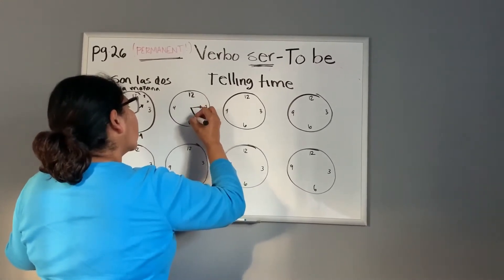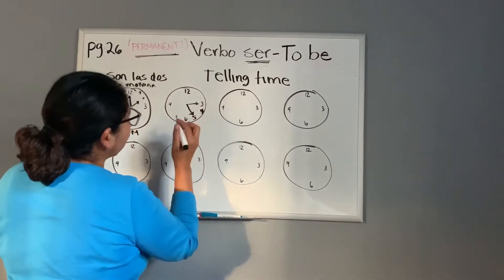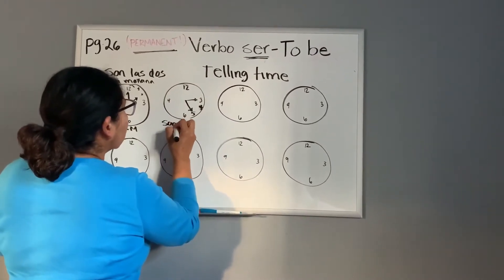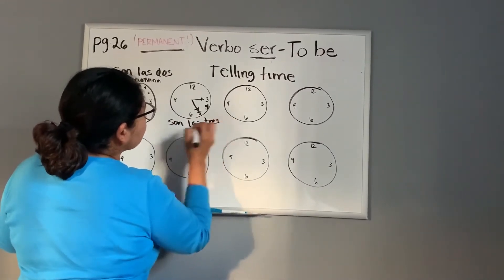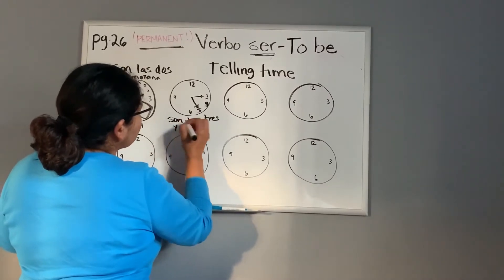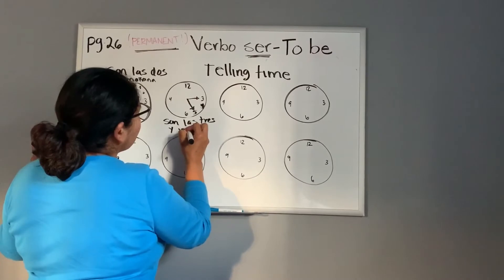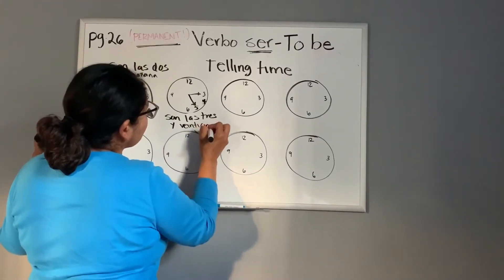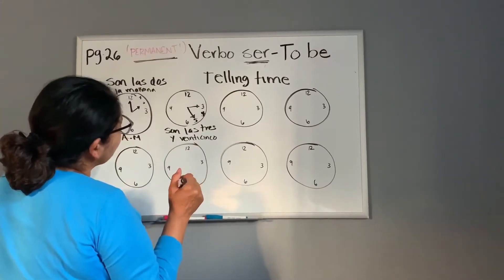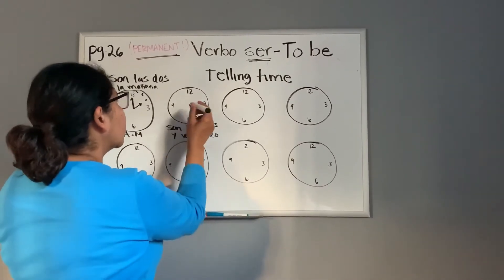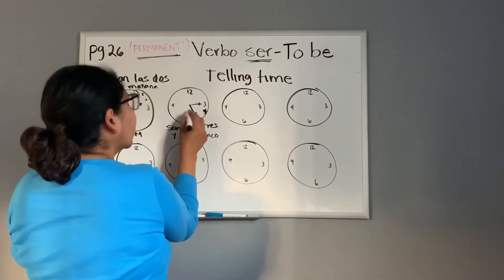So, son las tres y veinticinco. Tres y veinticinco. You can, in your book, it will say, never mind. Okay. After three thirty, I'll tell you.